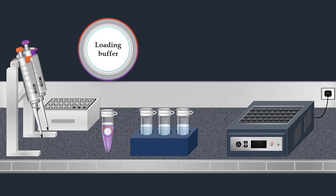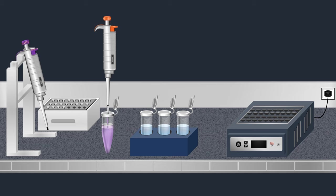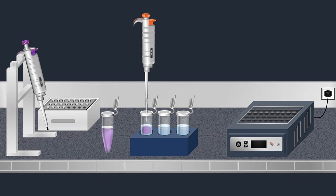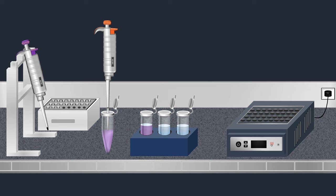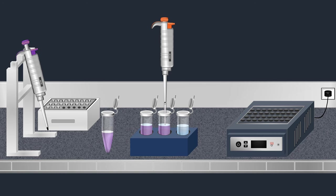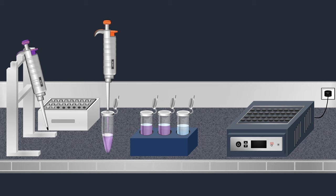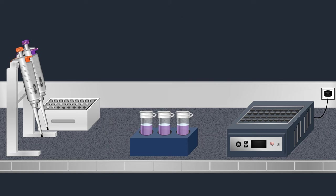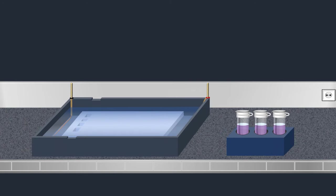For gel electrophoresis separation, a loading buffer is added to the DNA samples and is used as a tracking dye which migrates in the same direction as DNA, allowing the user to monitor the progress of the separation. Agarose gel electrophoresis is most commonly used to separate mixtures of DNA fragments of varying sizes.